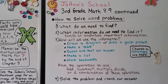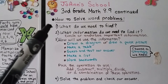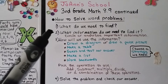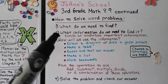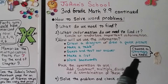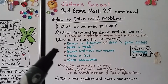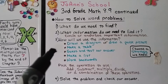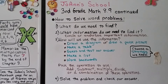As we solve word problems, there are some steps we can use to make it easier. Ask yourself what you need to find so you understand the question, and find out what information you need to use to answer it. You can circle or underline important information. Then decide how you'll use the information — what strategy will you use? You can draw a diagram or a quick picture, make a table, do guess and test, make a list, or even work backwards. Then pick the operation: add, subtract, multiply, divide, or a combination. Finally, solve the problem and check your answer to make sure it makes sense.